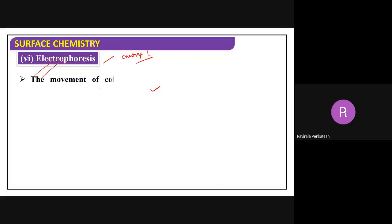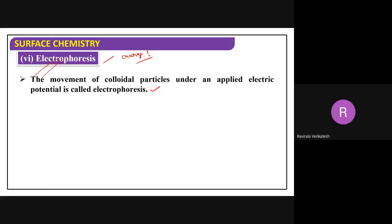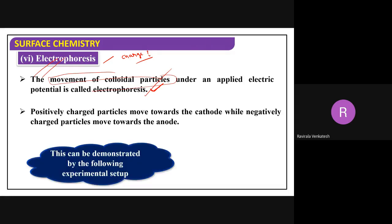Coming back to the definition: the movement of colloidal particles under the influence of an electrical field is called electrophoresis. Positive colloidal particles always move towards the cathode (which is negatively charged), and negative colloids move towards the anode (which is positively charged).